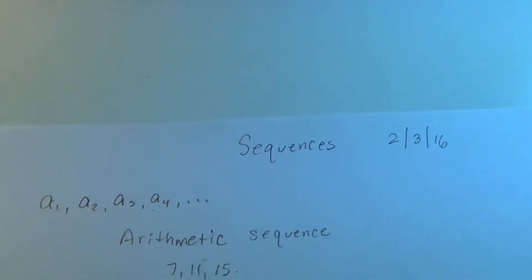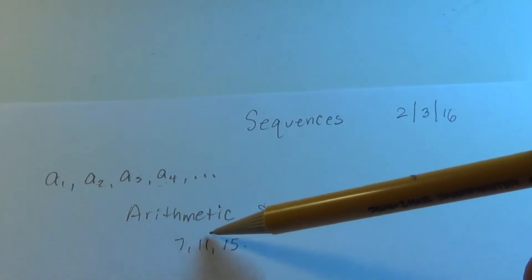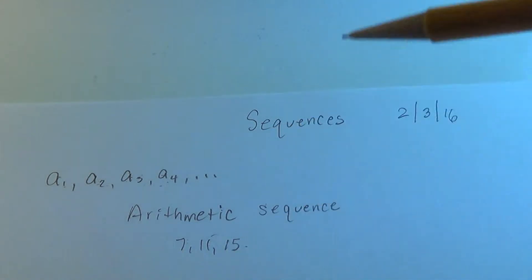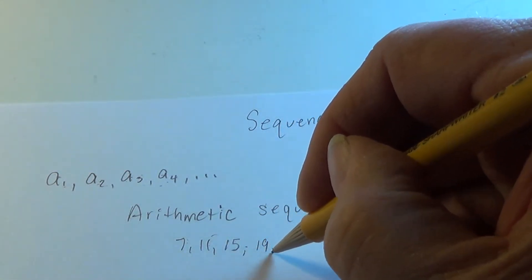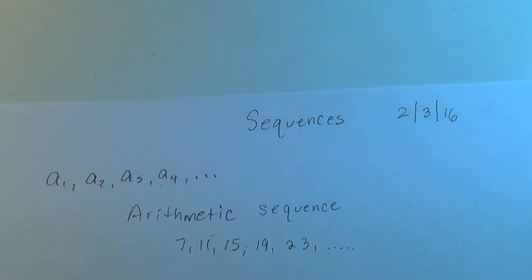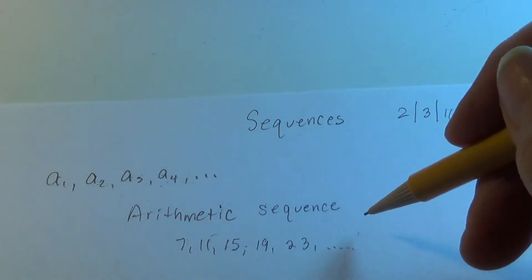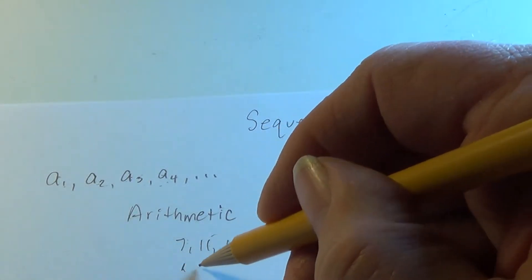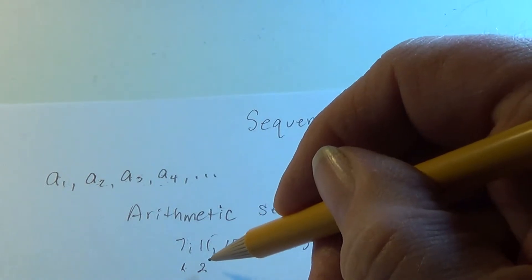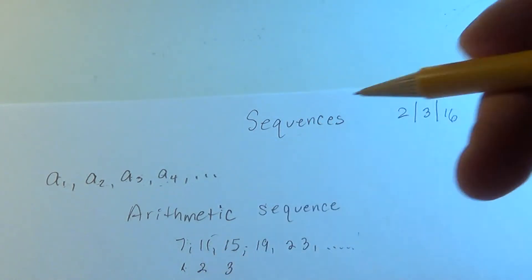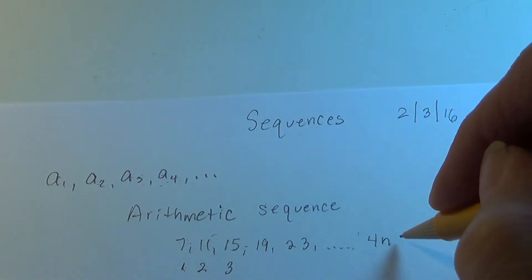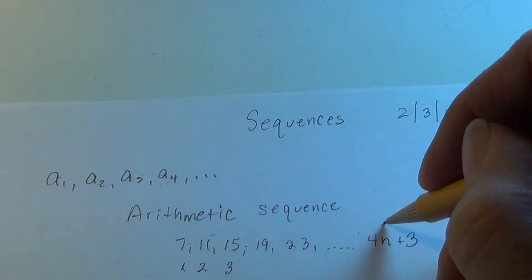Say we start with 7 and go to 11 and then 15. We added 4 to get from 7 to 11, and 4 more to get to 15. So we can quickly see it will go to 19 and then 23. If asked what the nth term is, you would need a generator or rule using n. The answer is 4 times n plus 3.